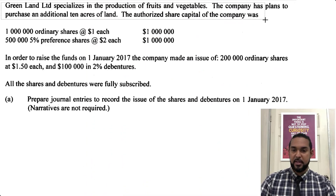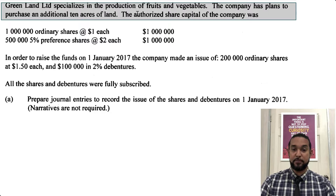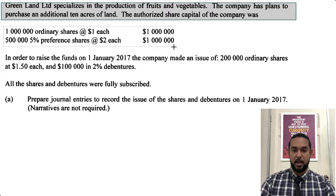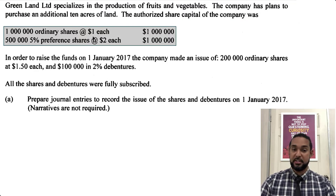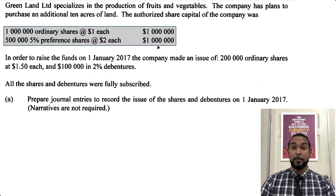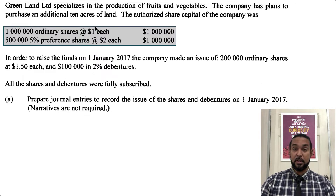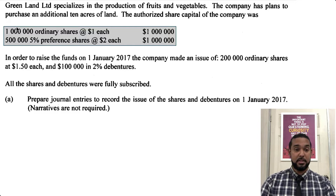So let's take a read. At the top it says Greenland Limited specializes in the production of fruits and vegetables. The company has plans to purchase an additional 10 acres of land. The authorized share capital of the company was: 1 million ordinary shares at a dollar each, totaling $1 million worth of ordinary shares, and 500,000 5% preference shares at $2 each, totaling $1 million worth of preference shares.